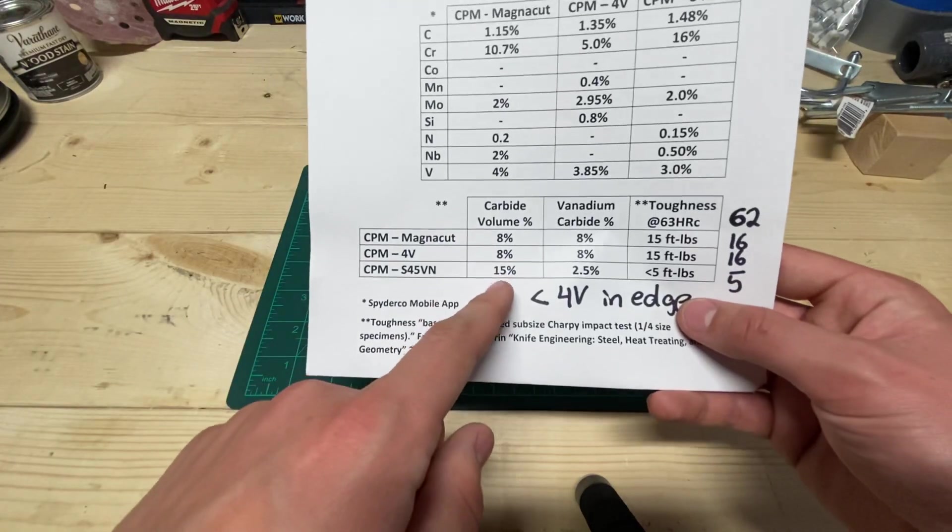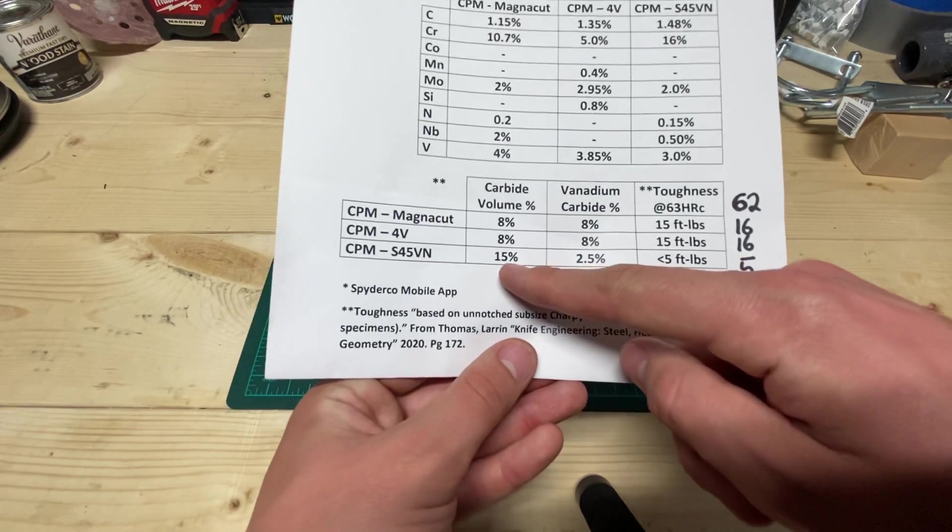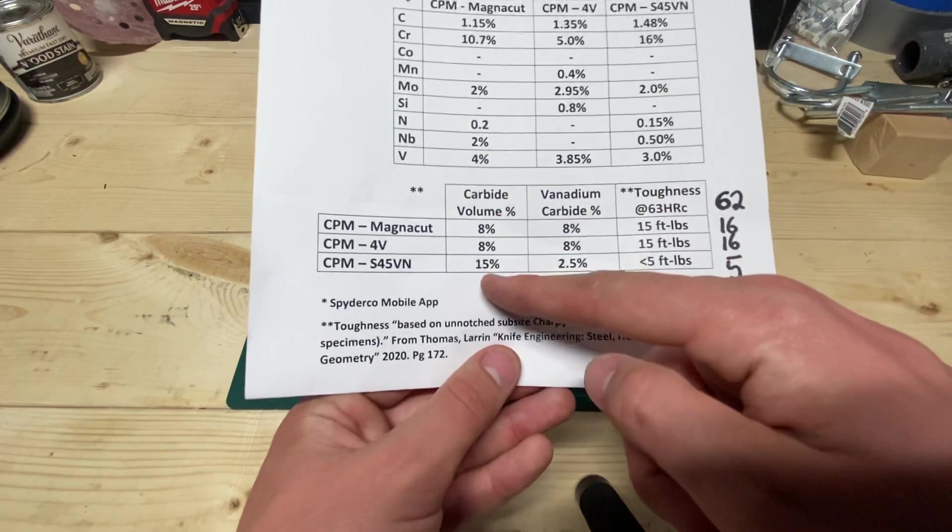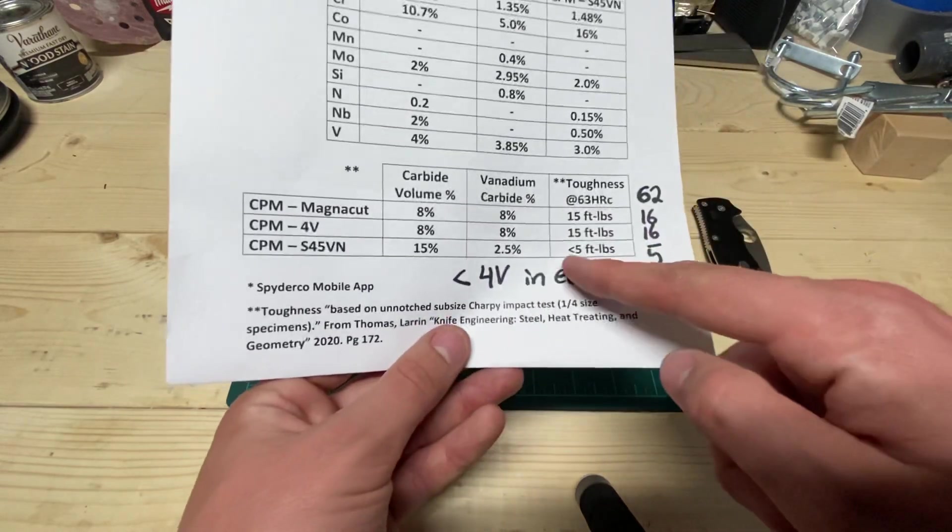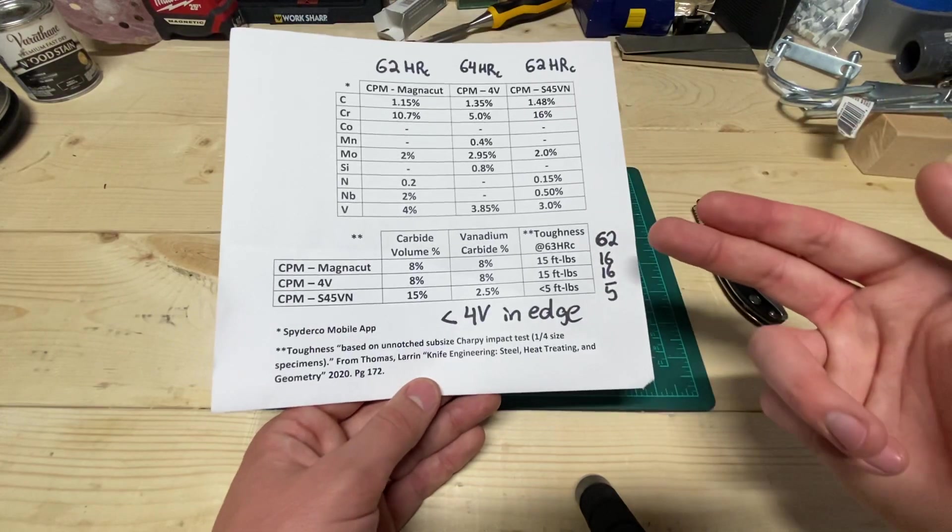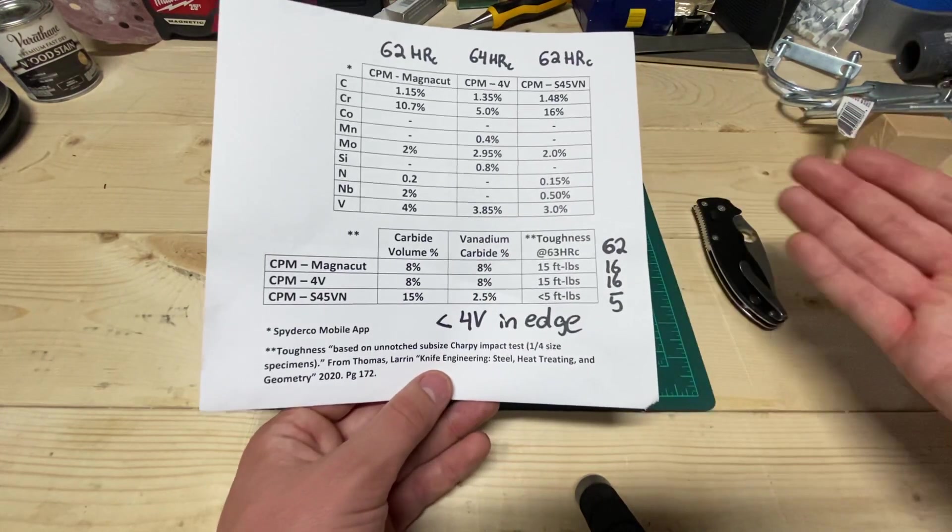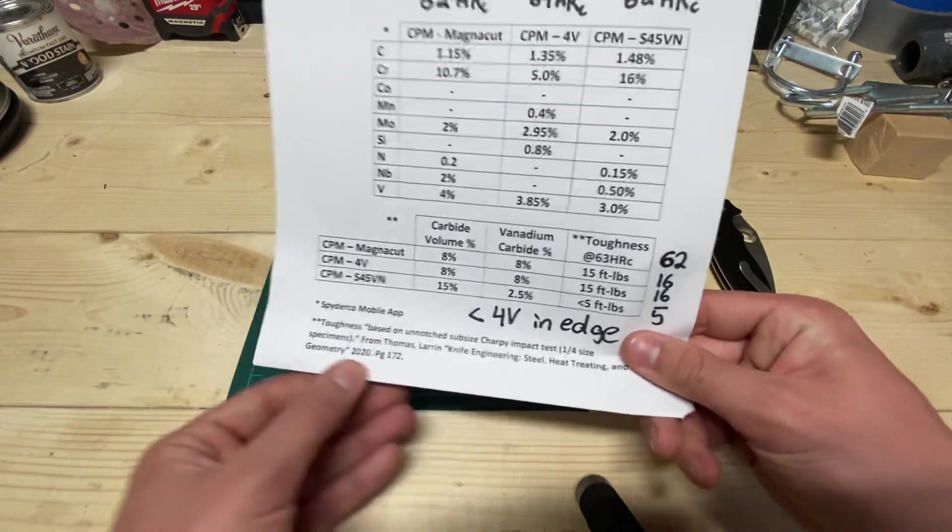And that's because you've got all those chromium carbides. Granted, there's a much higher volume of S45VN, but less than double your carbide volume. So we'll just pretend like it's double the carbide volume, but you get one third the toughness. So what Larrin has done is you get a stainless steel that doesn't compromise anything by being stainless. And that's really beautiful.